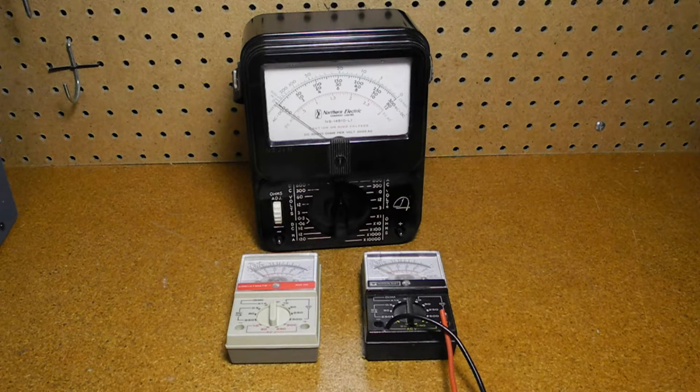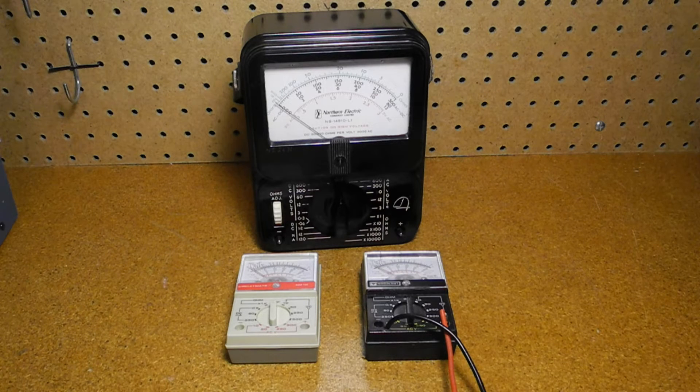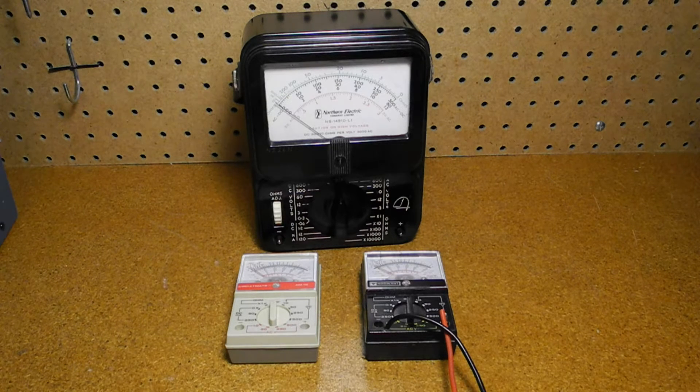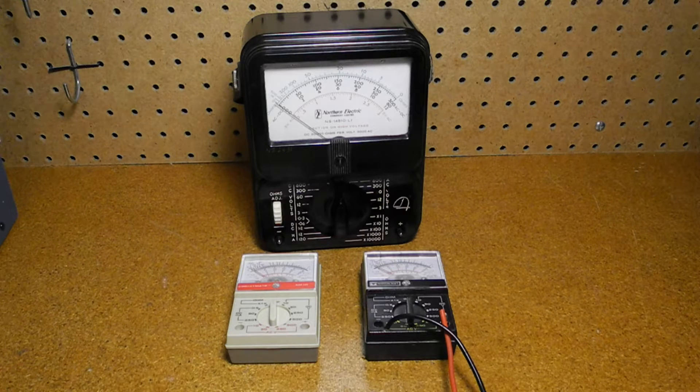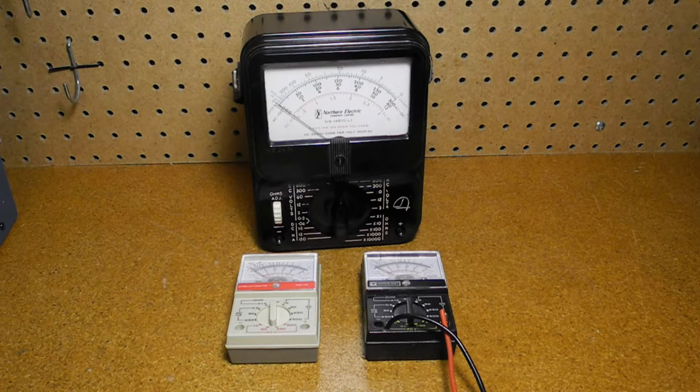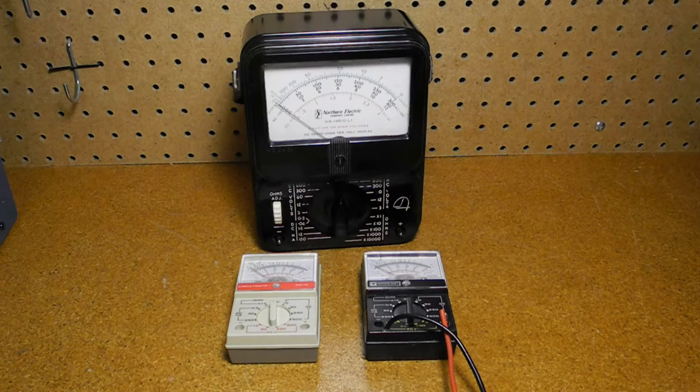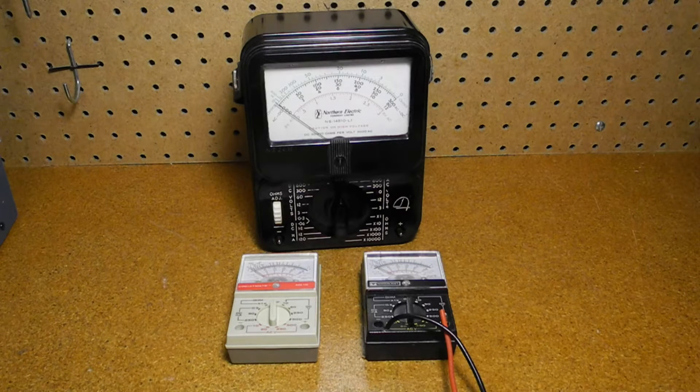It generally consists of a sensitive meter movement and a switching arrangement to select series and shunt resistors to support different voltage and current ranges. A rectifier circuit will also allow AC measurements to be made. Many can also measure resistance by applying power to a resistor under test, typically using an internal battery. Here are a few representative examples of VOMs.